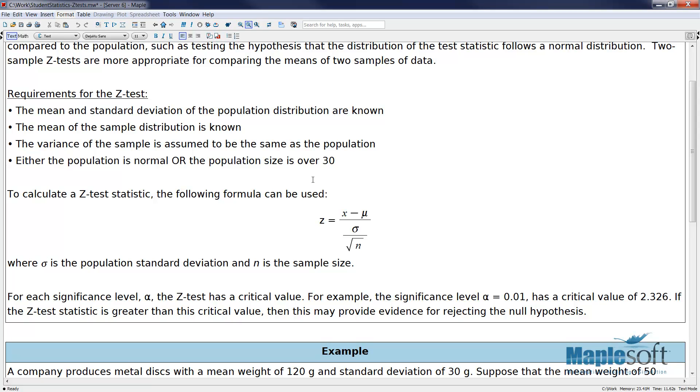To calculate a z-test statistic, the following formula can be used. z equals x (the sample mean) minus μ (the population mean), all over the standard error. The standard error is the standard deviation σ divided by the square root of the sample size n.